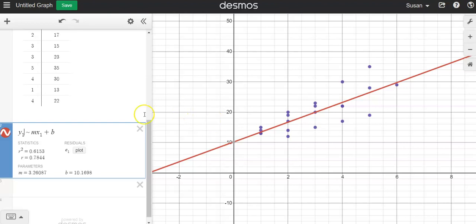This r value, we call this the correlation coefficient, is 0.7844. And that means there is a moderately strong correlation or relation between this line and these data. That means these data fit this line pretty well.